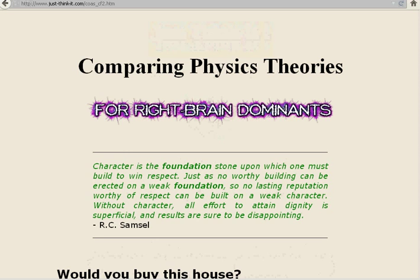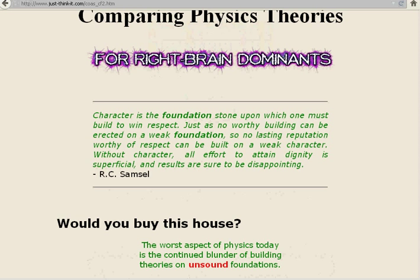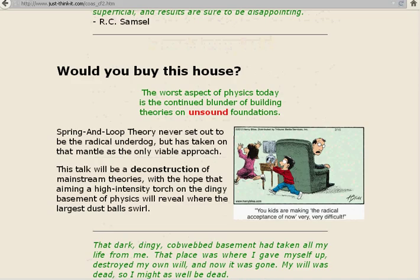The worst aspect of physics today is the continued blunder of building theories on unsound foundations. Spring and Loop Theory never set out to be the radical underdog, but has taken on that mantle as the only viable approach. This talk will be a deconstruction of mainstream theories, with the hope that aiming a high-intensity torch on the dingy basement of physics will reveal where the largest dust balls swirl.